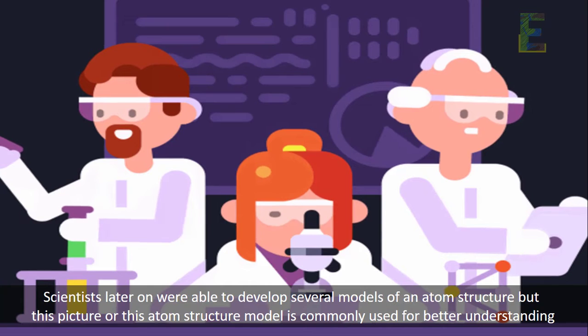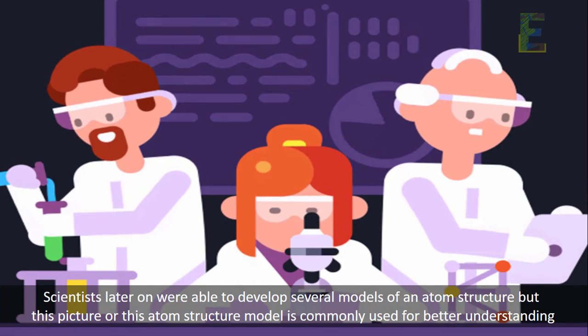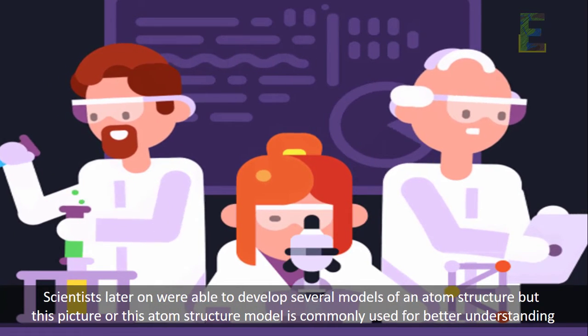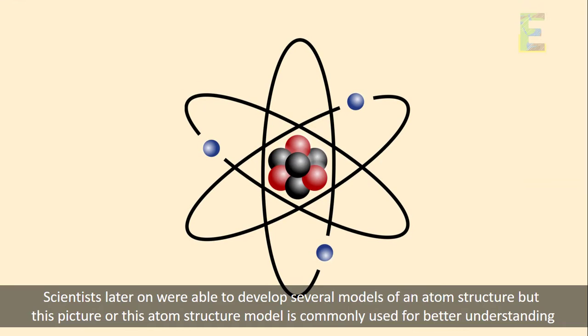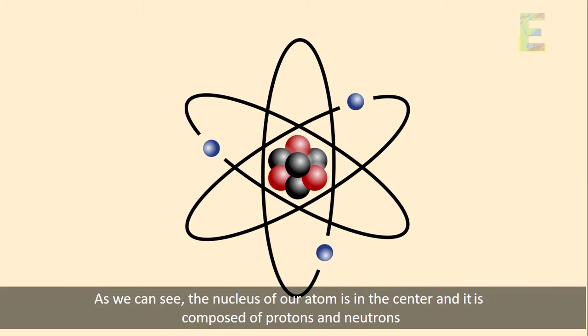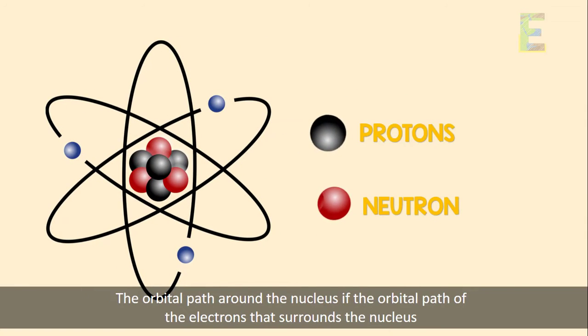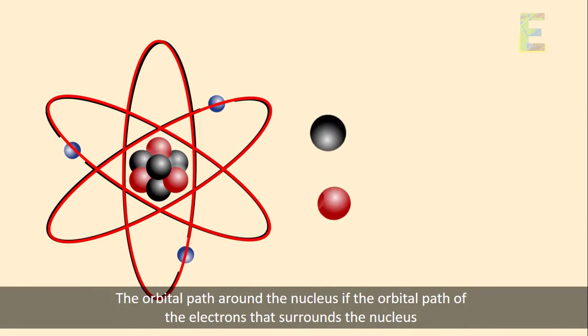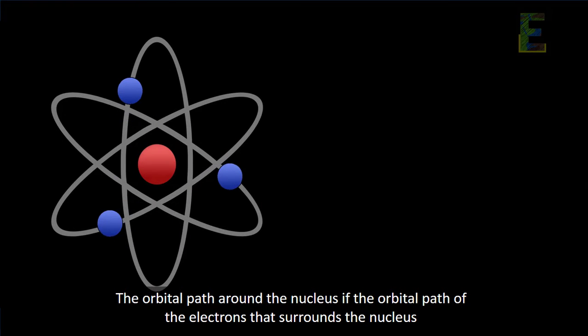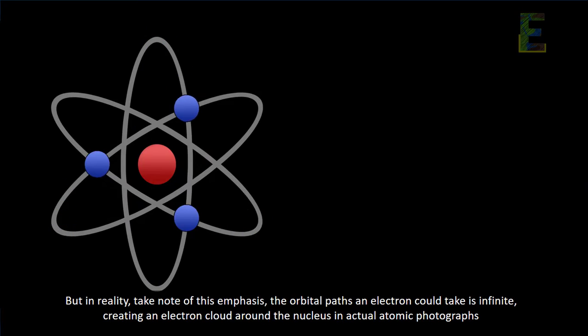Scientists later on were able to develop several models of an atom structure, but this picture, or this atom structure model, is commonly used for better understanding. As we can see, the nucleus of our atom is in the center, and it is composed of protons and neutrons. The orbital path around the nucleus is the orbital path of the electrons that surround the nucleus.